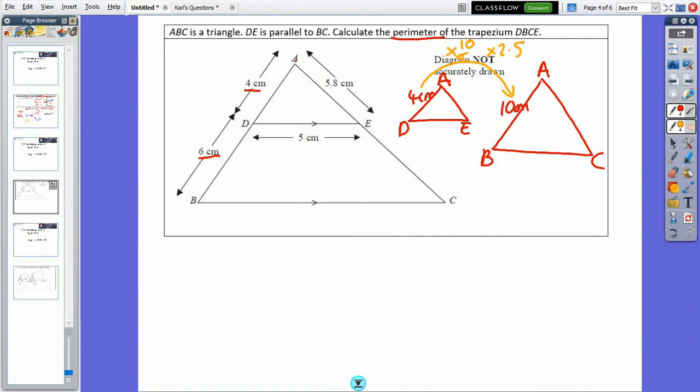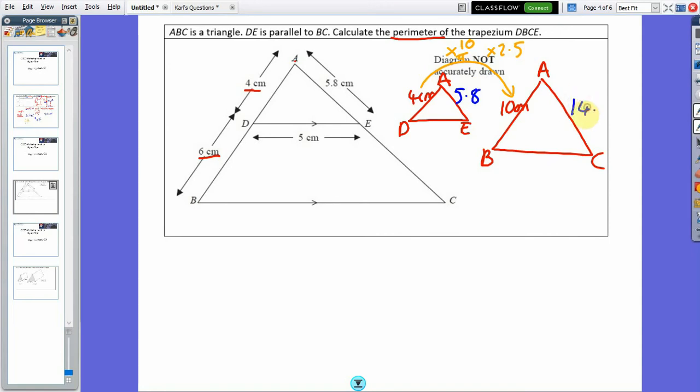I'm then going to just do all my new lengths. So I've got, I'll change color for you, 5.8. 5.8 times by 2.5, so times by 2.5 will give me 14.5.